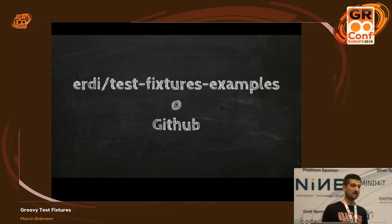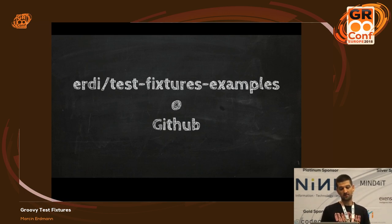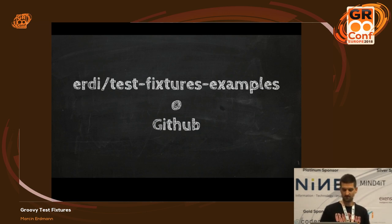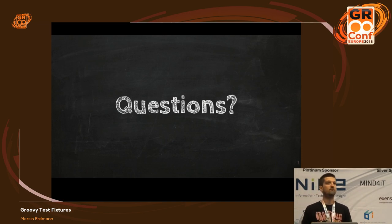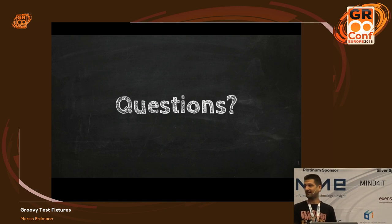If you want to have a look at the examples — because I was going through them really quickly — if you go to GitHub to my username slash test-fixture-examples, you will be able to check it out. There's a Gradle project and all of the tests run — at least they ran when I committed the thing yesterday. I think I've run over a bit, so I don't know if we have some time for any questions. Hopefully we have time for one or two questions if you have any.